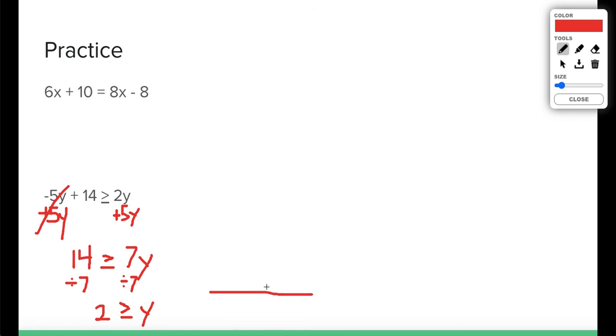So if I wanted to graph that, I really need to think about which way the symbol is facing. This would be a shaded in dot because it has the or equal to. Y has the less than symbol facing it, so we want to make sure we're shading towards values like 1, 0, and so on into the negatives. All right you guys, that's all I have for you today on this extension lesson. Check in with your teacher if you have any questions.